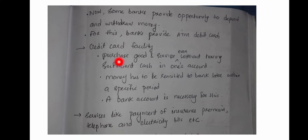The most important facility is the credit card facility. Using a credit card, you can purchase goods even beyond your account balance — spending more than 50% over your account limit. This extra amount must be repaid within a specific period. Banks also facilitate payment of insurance, telephone, and electricity bills.